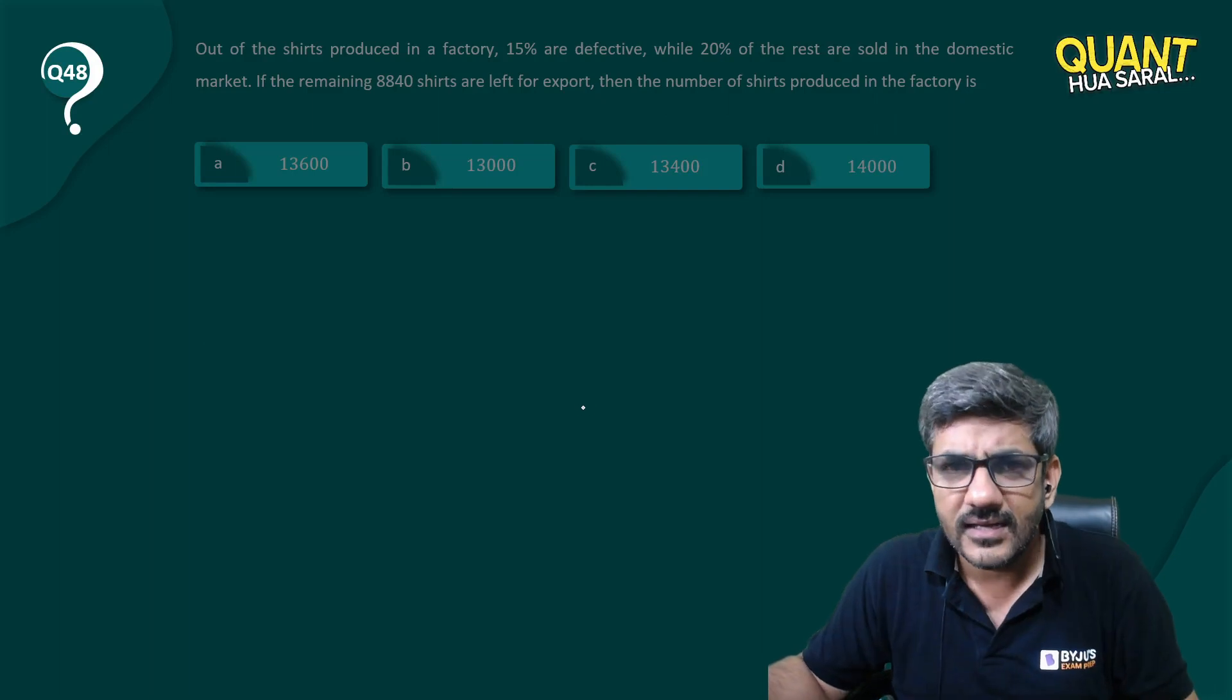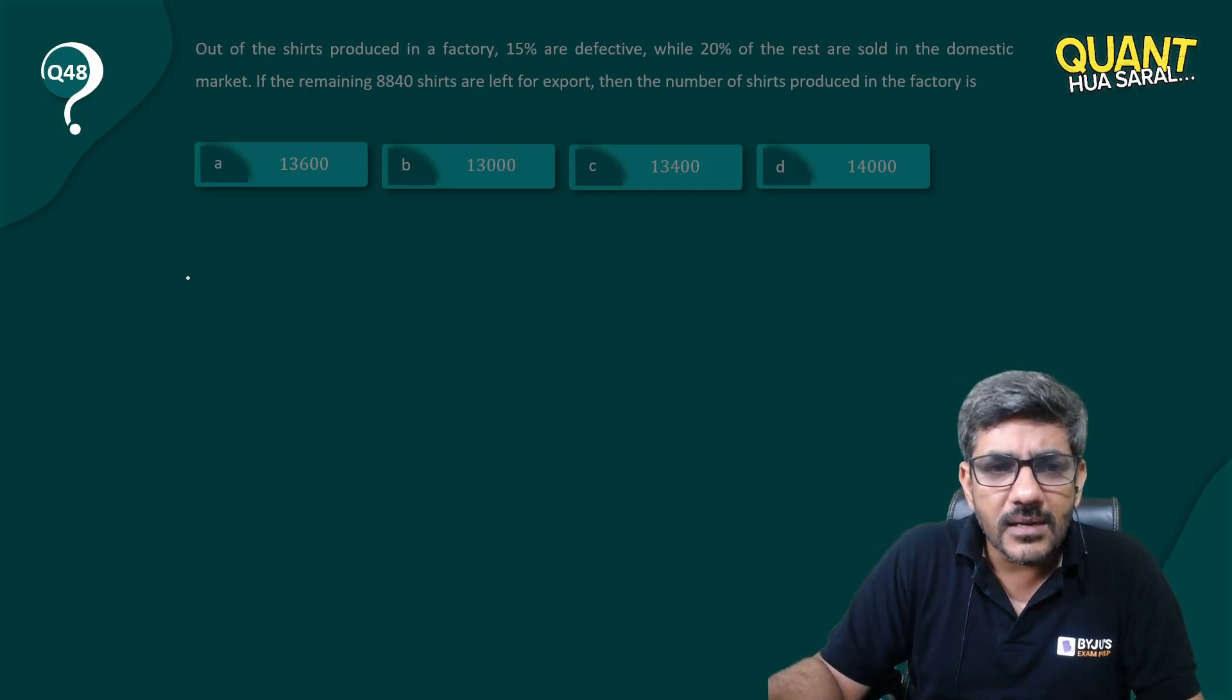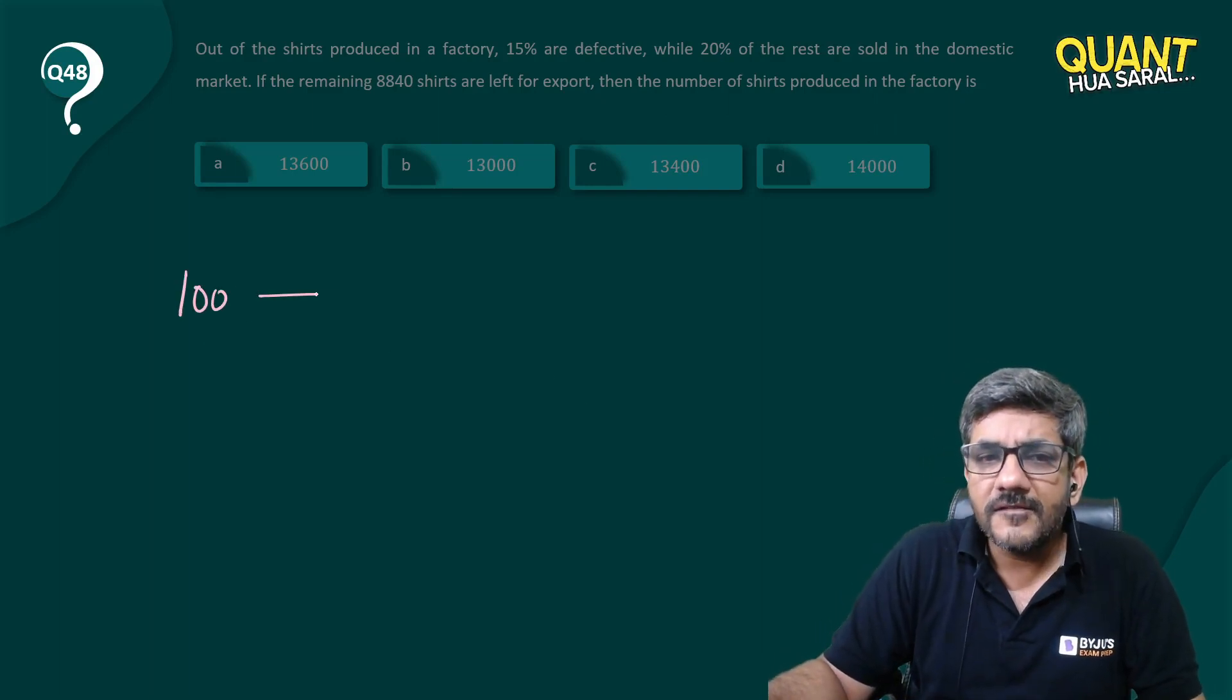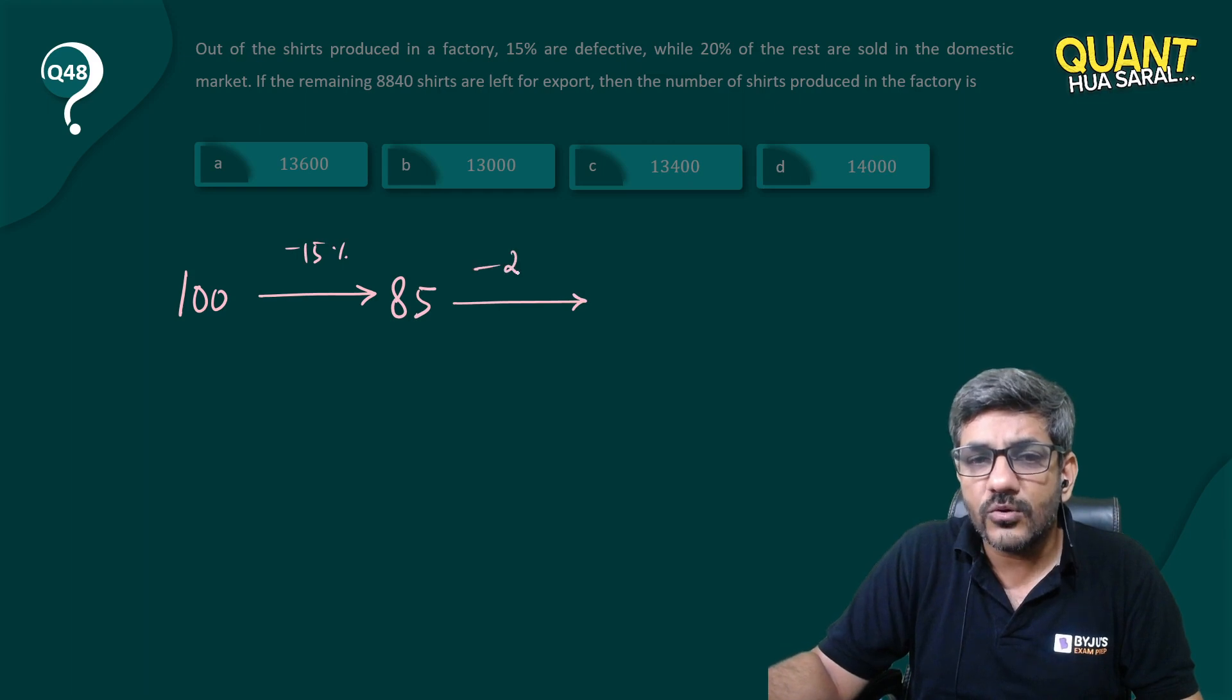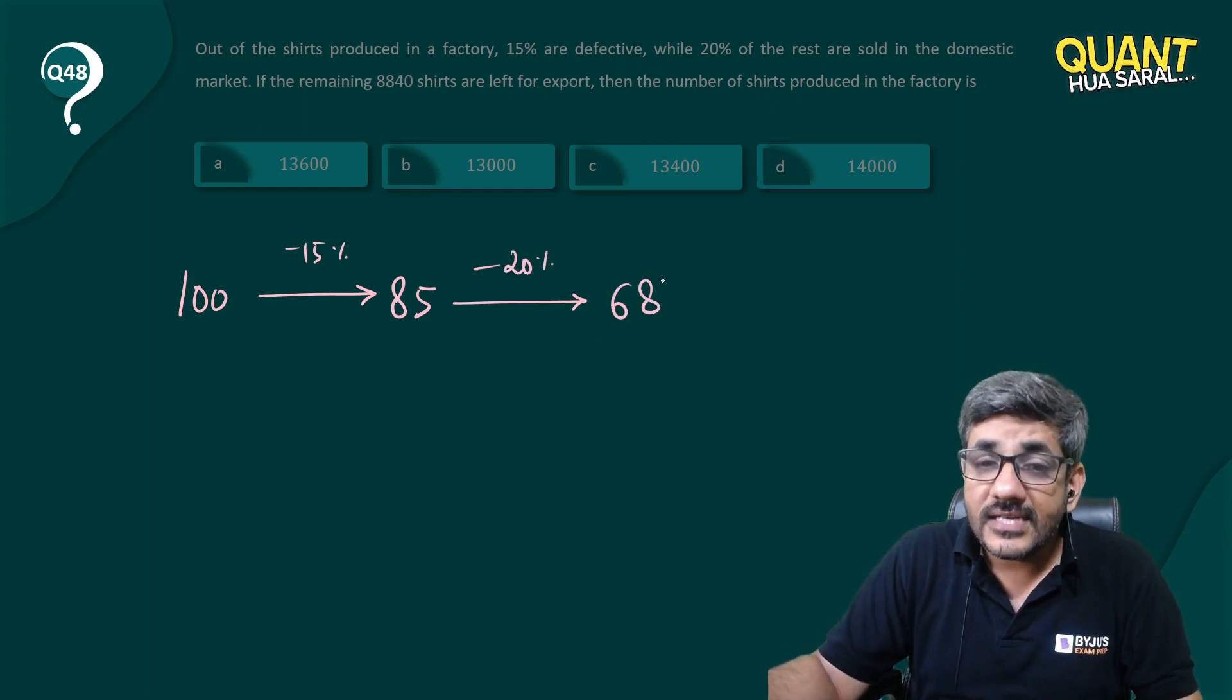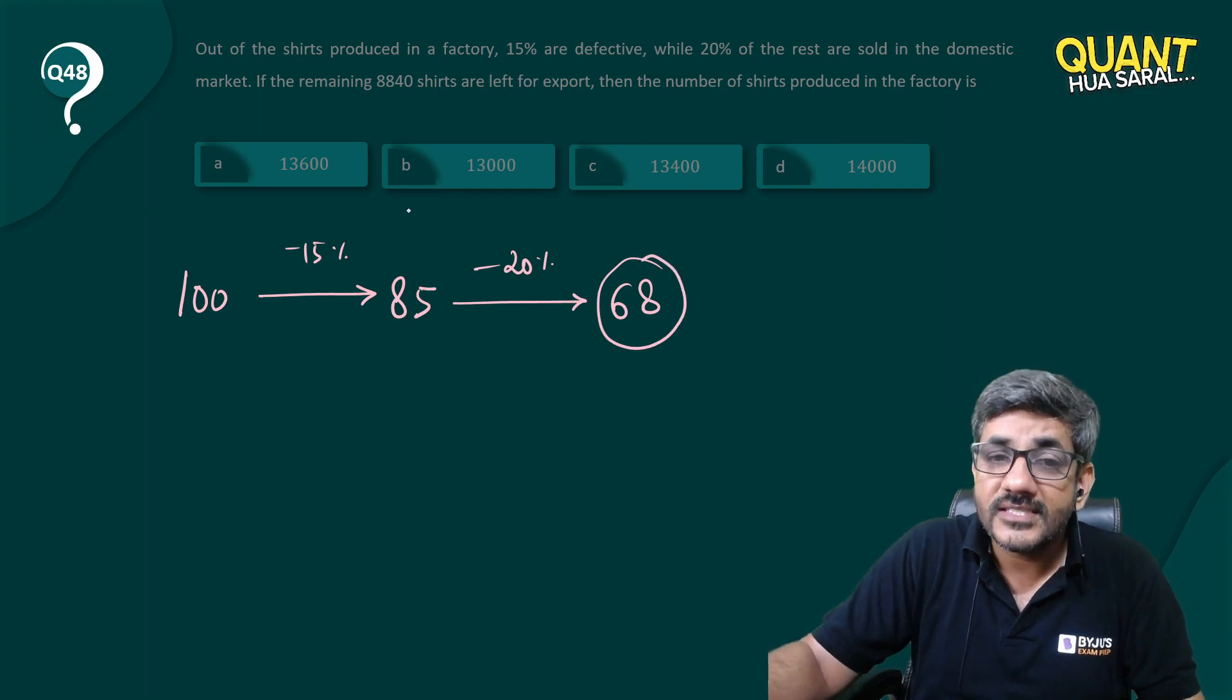What else can we do? It's a routine question. Then I would say let us say the number of shirts is 100. 15% of them are defective, that means the remaining number of shirts is 85. Out of those 85, 20% are sold in domestic market, so how many of them are left? 68. These 68 are remaining.